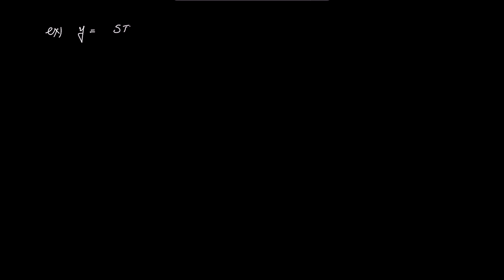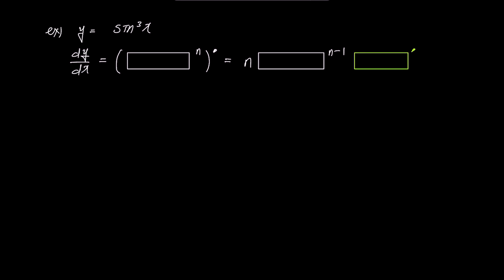We have y = sin³x and will use the box rule to find dy/dx easily. We place sin x inside the box and set n to 3. On the right side, we also set n to 3, insert sin x into the box, and in the green box prime we put the derivative of sin x, which is cos x. Simplifying, the answer becomes 3 sin²x times cos x.